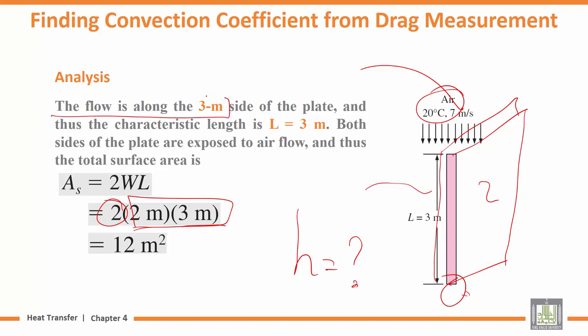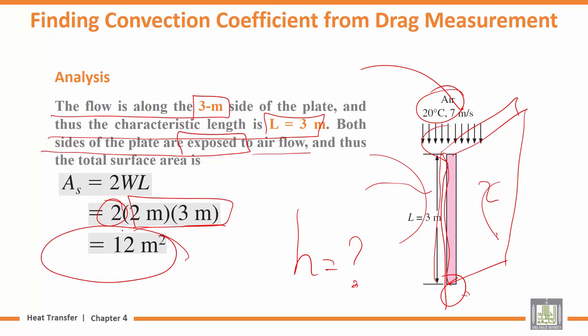The flow is along the 3-meter side of the plate, and thus the characteristic length for later calculations like Reynolds number is 3 meters—the length the air travels along the plate. Both sides of the plate are exposed to the air flow. Total area is 12 square meters.